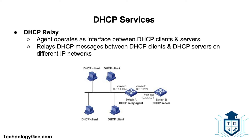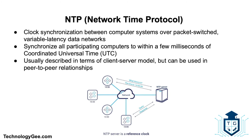The DHCP relay agent operates as the interface between DHCP clients and the server. It relays DHCP messages between DHCP clients and DHCP servers on different IP networks.